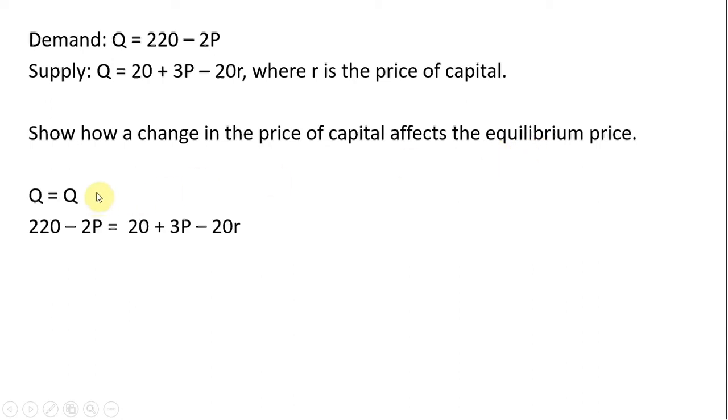We start by setting quantity demanded equal to quantity supplied, so setting these two equations equal to one another, and we're going to solve for price. Adding 2P to both sides we get 5P, subtracting 20 from both sides we get 200, and then adding 20r to both sides we get this result. Dividing everything through by 5, price equals 40 plus 4r.